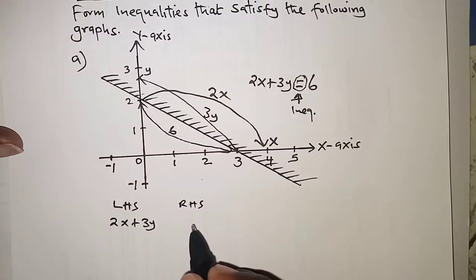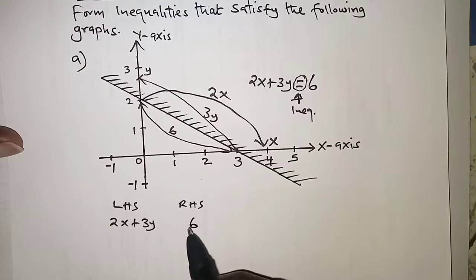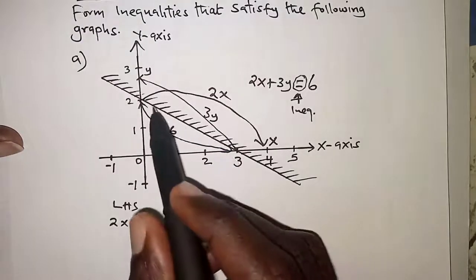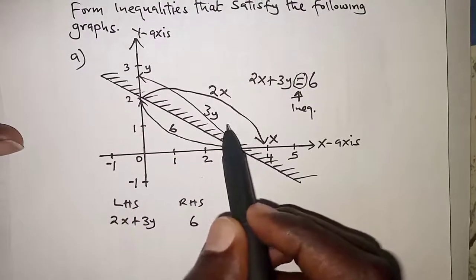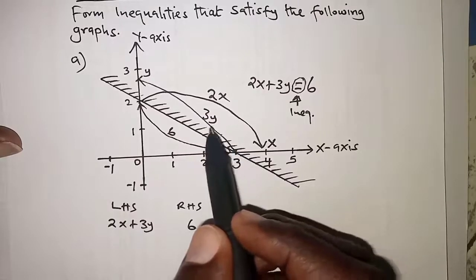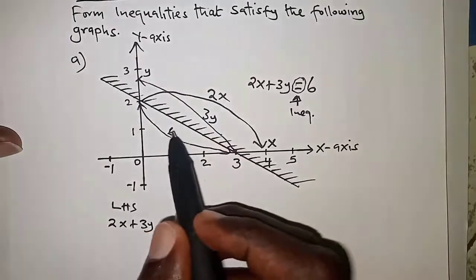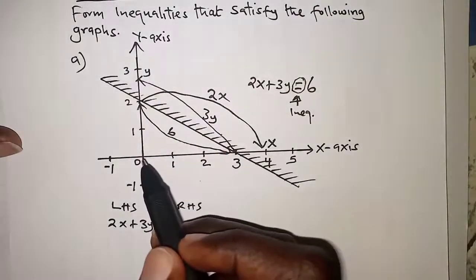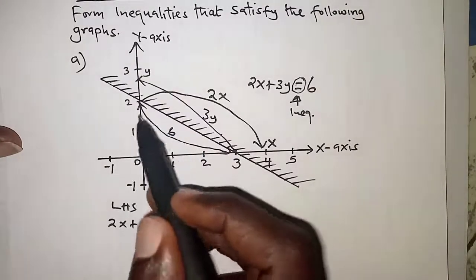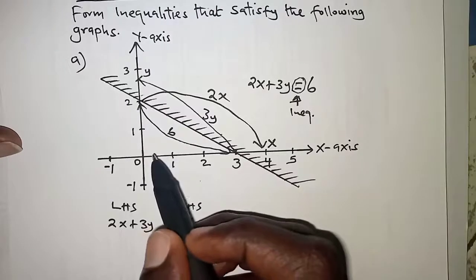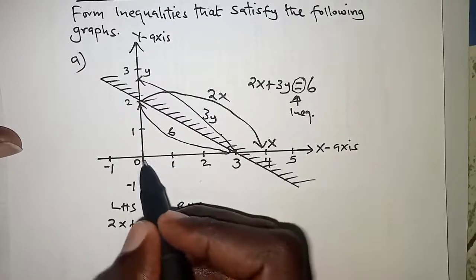The side that is usually shaded is the unwanted side, so we will try to pick a point from the wanted region. On the wanted region we have so many points, so you pick a feasible point like point (0,0), that is the origin, or point (1,1) conspicuously on the wanted side.